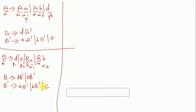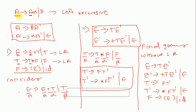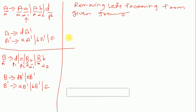Now the second problem is left factoring — how to remove left factoring from a given grammar. Left factoring means a grammar of the form A gives α β slash α γ. If a production's first part is the same, that is nothing but left factoring. To remove it: A gives α A-dash, and A-dash gives β slash γ.